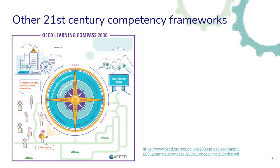There are also many other 21st century competency frameworks around. Here's another example from the OECD that has been published recently — their new Learning Compass for 2030 — which also tries to provide a framework for thinking about the kinds of competencies, knowledge, skills, and attitudes that students need for the future, given how the world is now in the 21st century compared to previous centuries.